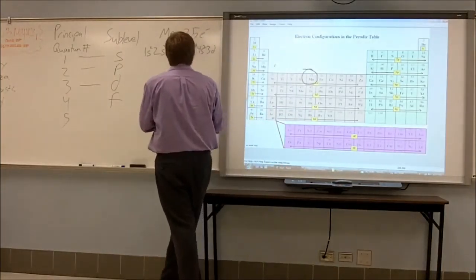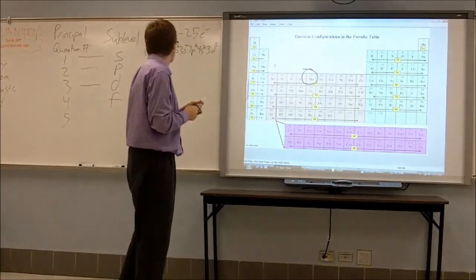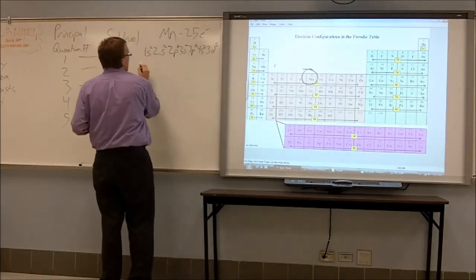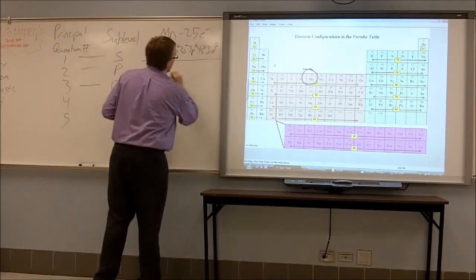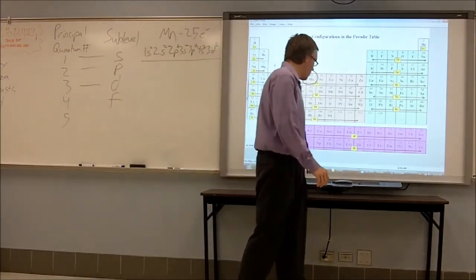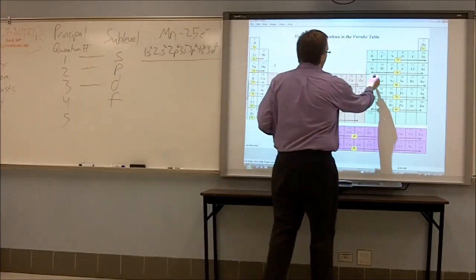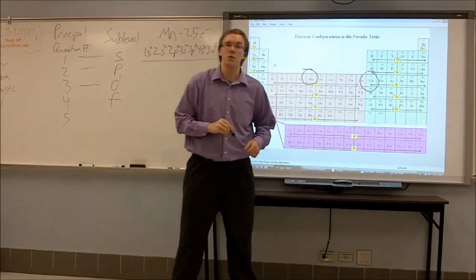Now we have to count how many electrons we need in this D shell to get to manganese. So we start over, we count one, two, three, four, five in. So we write the little five above that D. So here is our complete electron configuration for manganese.